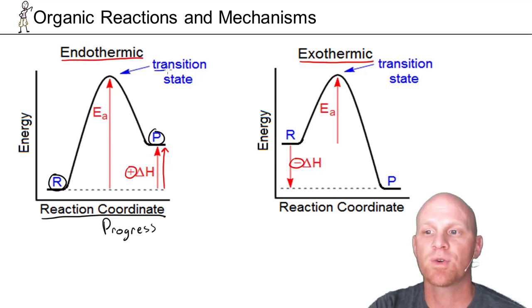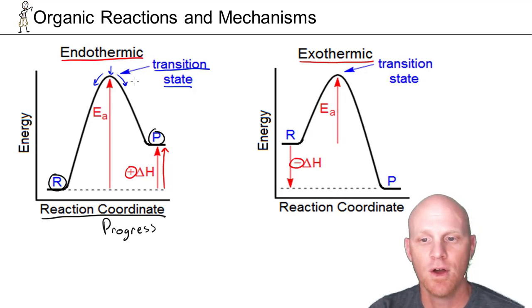A couple of the terms you should know here. We've got the transition state. The transition state is what you've got at the top of the hill here. At the top of that hill, it's not something you can isolate. You're on the way to becoming products, and at that point, you either got a choice. You go back to being reactants, or you go forward to being products. But the transition state itself is not isolatable.